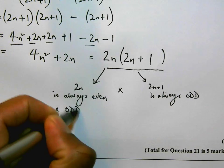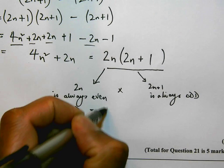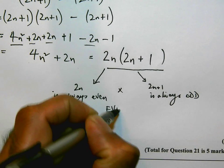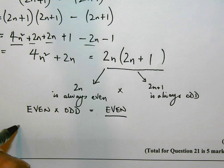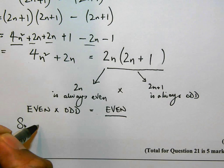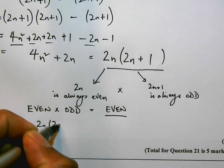So what this means is, so 2n(2n+1) is always even.